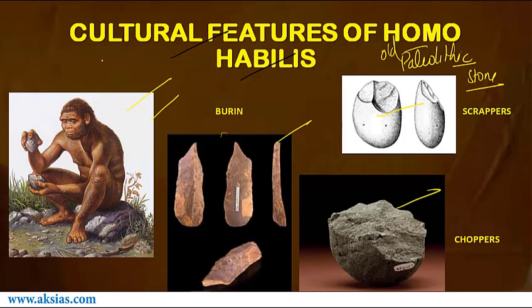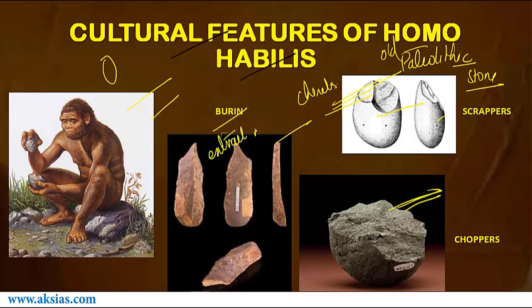Choppers are stone pebbles chipped at one end to create a sharp edge. They were used to cut skin, meat, or wood, to slice meat, to work on hides, and to scrape or shape bone or wood into new tools. Scrapers and chisels were used specifically to scrape the skin off animals. Burins were used to extract meat and also to access bones.